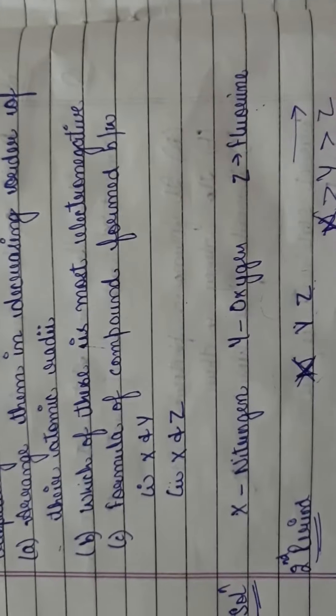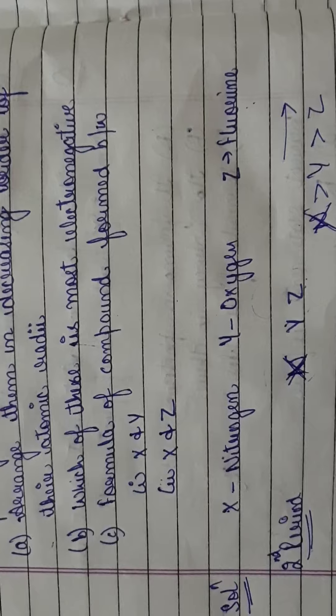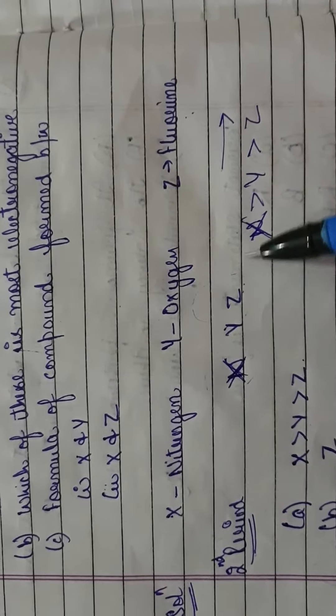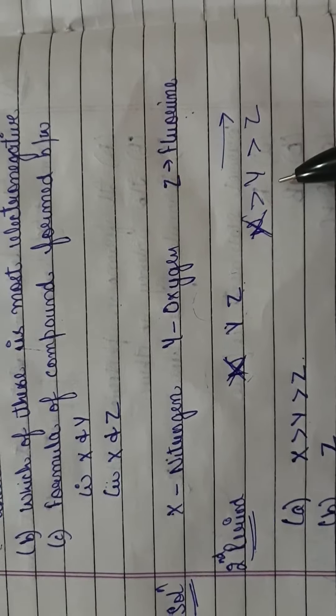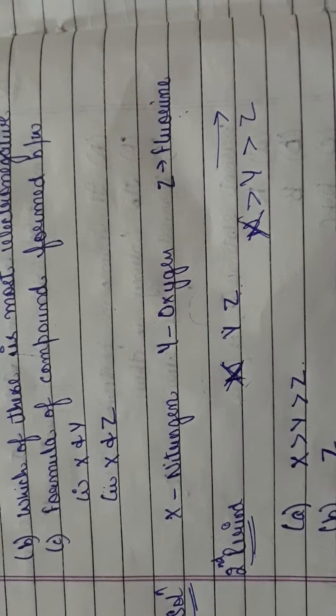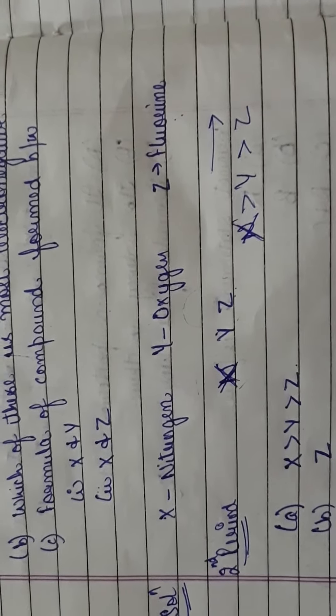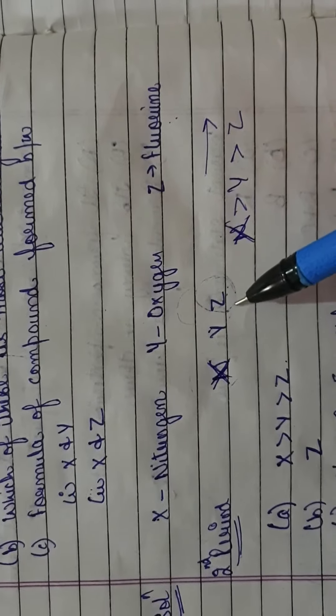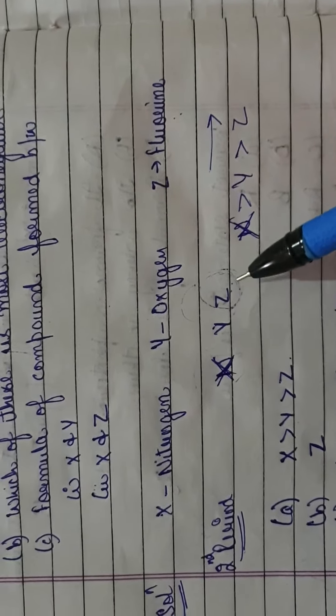Which of these is most electronegative? Electronegativity is opposite to atomic radii - whichever has the smallest atomic size will have the highest electronegativity. So if Z has the smallest atomic radii, then Z will be most electronegative.